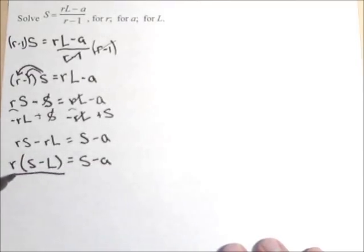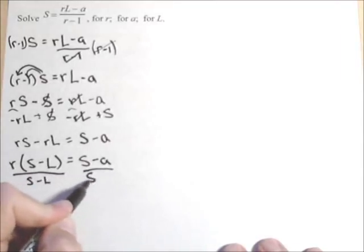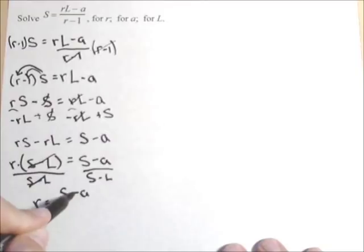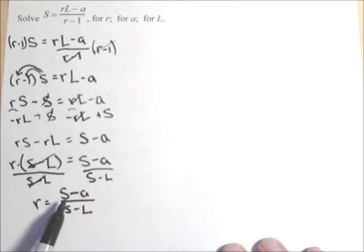We're almost done. Last step, divide by S minus L on both sides. Those do cancel because we have a product. So R equals S minus A over S minus L. You may be tempted to cancel out these S's. Do not do it. We do not have a product on top and bottom. We have subtraction. So we cannot cancel out those S's. So that's solving for R.